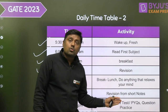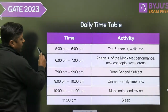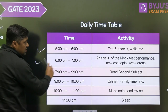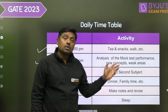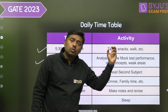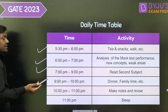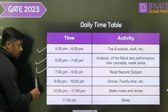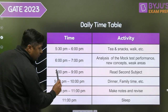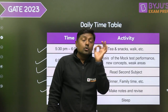On alternate days, solve previous year questions or practice questions from standard textbooks during that time. From 5:30 to 6 PM, have tea or snacks and go for a long walk. From 6 to 7 PM, analyze your mock test — review your performance, new concepts, and weak areas. From 7 to 9 PM, go for your second subject. From 9 to 10 PM, take dinner — this is family time.